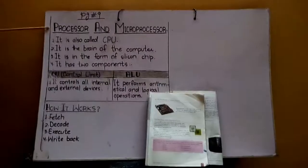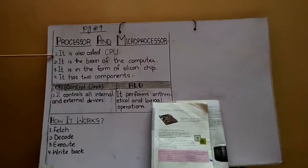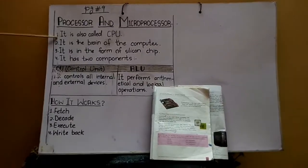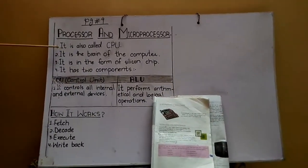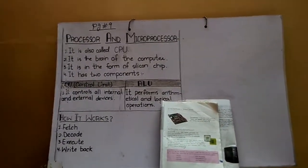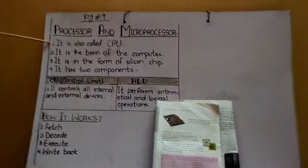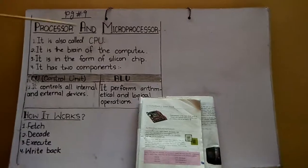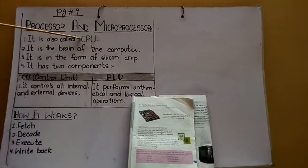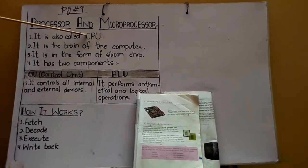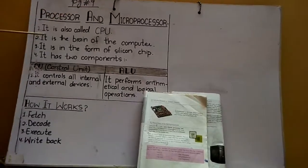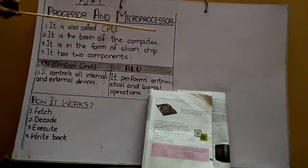What is a processor? I have selected 4 important points from your topic. You should understand and memorize these 4 points. Point number 1: It is also called CPU, meaning Central Processing Unit. It is the brain of the computer.